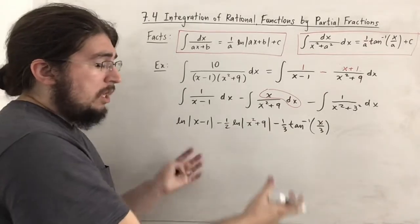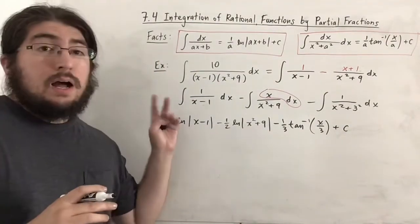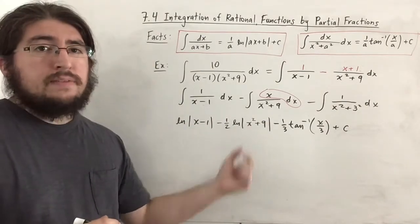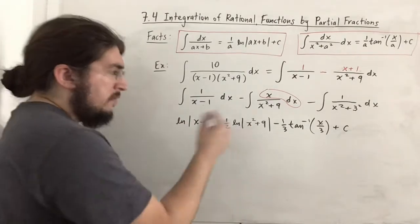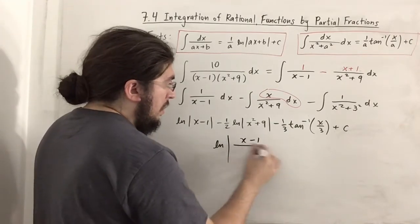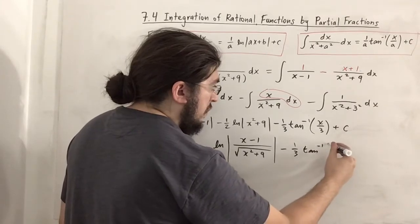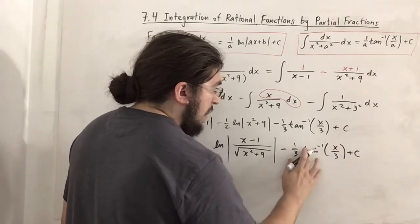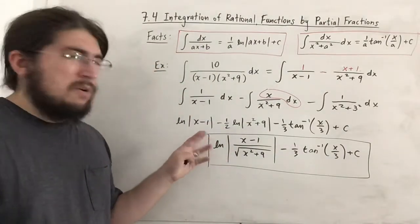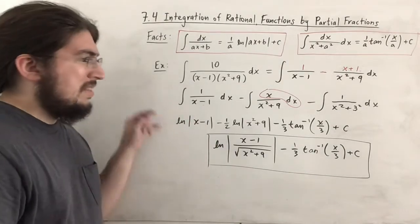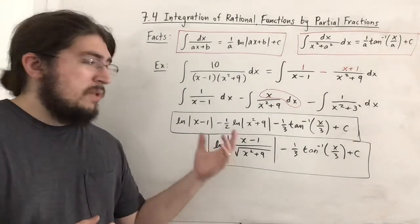The answer can be simplified further: bringing the one-half in as a power gives a square root, and ln|x minus 1| minus (one-half) ln|x squared plus 9| equals ln of |x minus 1| divided by the square root of (x squared plus 9). So a simplified form is ln|(x minus 1) over sqrt(x squared plus 9)| minus (1/3) arctan(x/3) plus C. Both forms are acceptable.